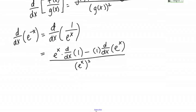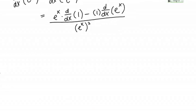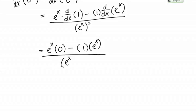So let's do a little bit more work in the numerator. This equals e to the x times the derivative of 1 and that's 0 minus 1 times the derivative of e to the x and that's e to the x all over e to the x quantity squared.